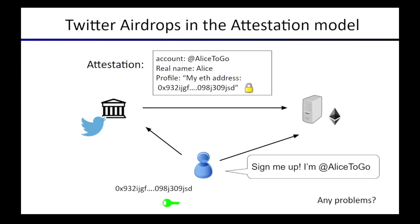To go back to the simple airdrop example and assign it these terms: Alice is the subject; the relying party is the new token application — the smart contract or the developers behind it; and the issuer in this case is Twitter, since they're the ones who provide the Twitter account. The relying party — the DApp smart contract conducting the airdrop — will rely on the claim of the issuer that says: this is the account Alice2go, this is Alice's real name, and this is the Ethereum address pasted in the profile.